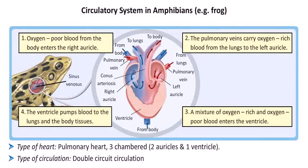Blood passes twice through the heart — once between the heart and lungs, and again from the heart to the body parts. Such a circulation is called double circuit circulation.